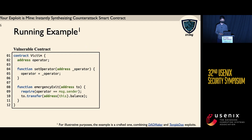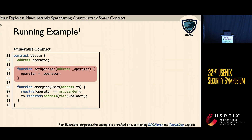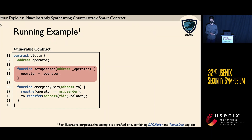We will use a running example to demonstrate this idea. On the left-hand side, we show the source code of a vulnerable contract, where there are two functions. The 'set operator' function lets the owner set the operator of the smart contract, and the 'emergency exit' function allows the operator to transfer funds out in an emergency situation. However, there is a bug: the set operator function, which should be access-controlled, is missing that check. As a result, the attacker can invoke this function to set himself as the operator, and then invoke the emergency exit function to get the funds.